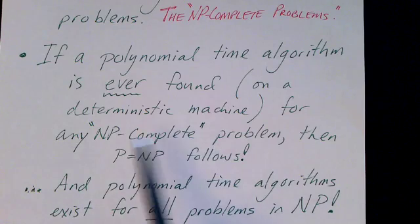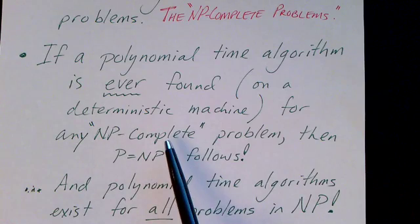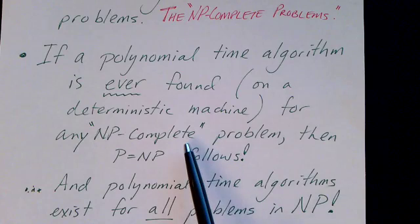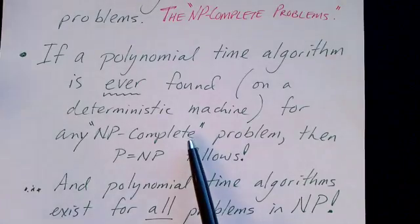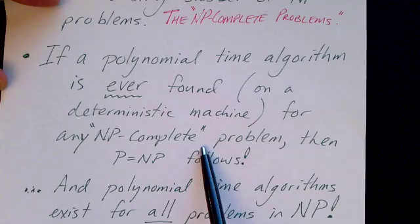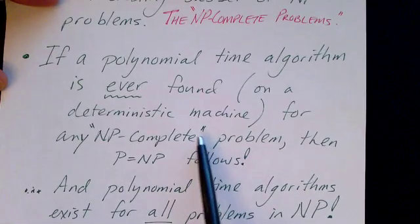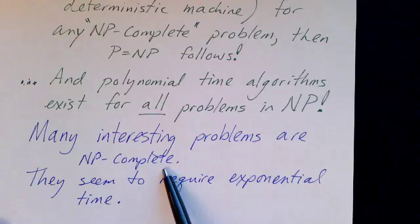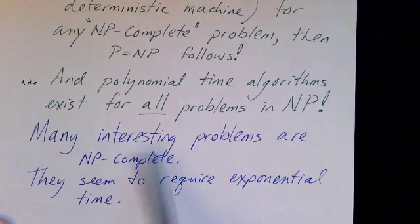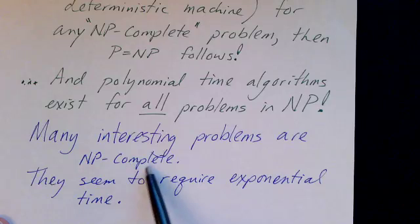So to say that a problem is NP-Complete, in some sense, says that it really is truly NP. And you're not very likely to find a polynomial time algorithm for it. If you do, you'll win the million dollar prize that's being offered, okay? And many interesting problems are NP-Complete.